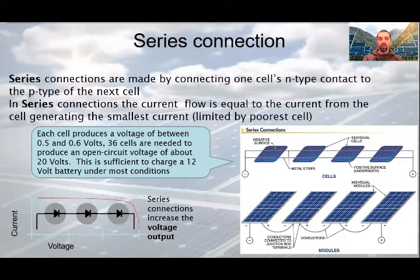In series connection, the current flow is equal to the current from the cell generating the smallest current, actually limited by the poorest cell. So, series connections increase the voltage output. The more cells are linked together in series, the higher the emitted voltage.